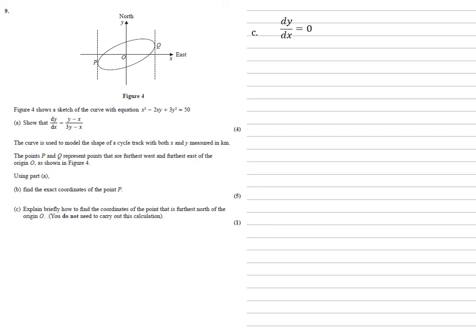Our equation for the gradient has got a numerator of y minus x, so using this we can say that y minus x equals zero, and we've got our original equation for the curve x squared minus 2xy plus 3y squared equals 50. We've now got two simultaneous equations to solve which will give us two answers, but because we want the top point with gradient zero, we're going to take the positive answers.